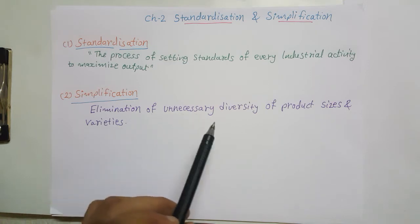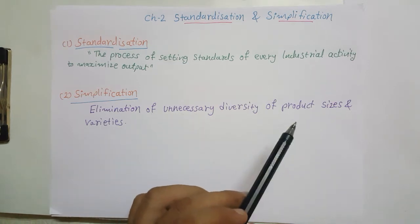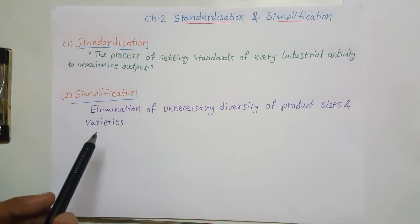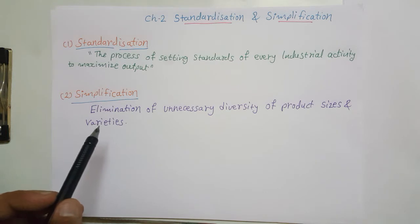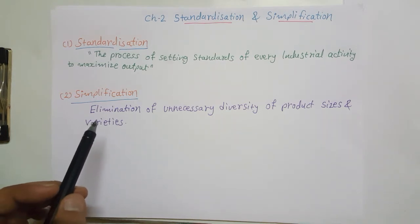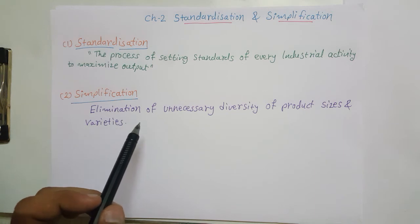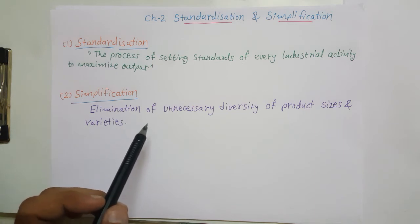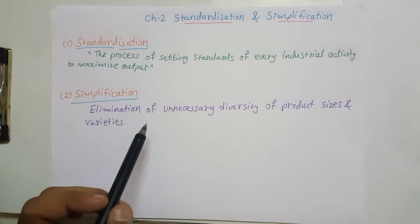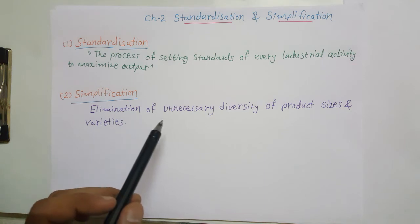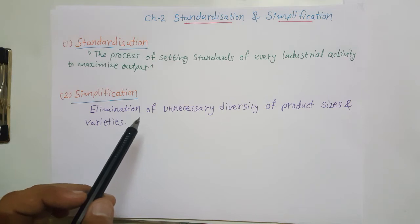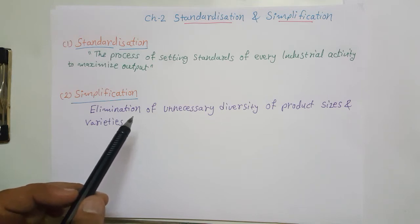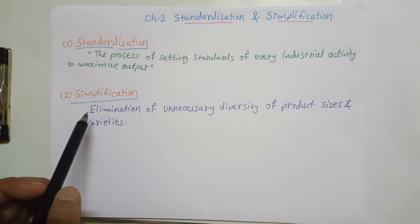Next is simplification. Simplification means elimination of unnecessary diversity of product sizes and varieties. In an organization, if there are unnecessary varieties, we must eliminate them. For example, Apple company stops the production of models which are not popular, and Samsung similarly stops old models and moves to new ones.